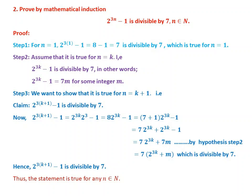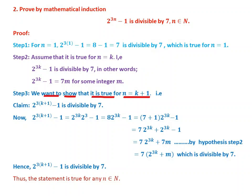Number 2: Proof by mathematical induction. Show that 2^(3n) - 1 is divisible by 7, where n is a natural number. We prove this using mathematical induction by following three steps: Step 1, check for n = 1; Step 2, assume it is true for n = k; and Step 3, prove it is true for n = k + 1.